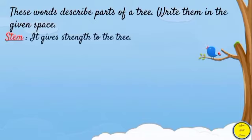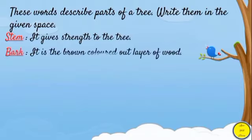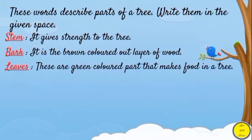Stem gives strength to the tree. Next one: bark — it is the brown colored outer layer of wood.